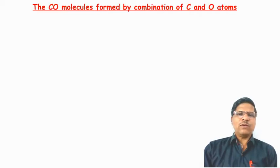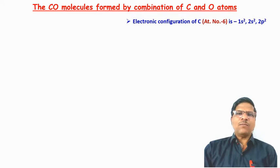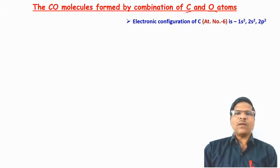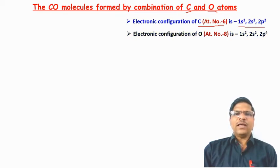We will start with carbon monoxide. Carbon monoxide is formed by the combination of one carbon and one oxygen atom. We have to consider the electronic configuration of these two elements. Carbon has atomic number 6 and electronic configuration 1s² 2s² 2p². Oxygen has atomic number 8 and electronic configuration 1s² 2s² 2p⁴.